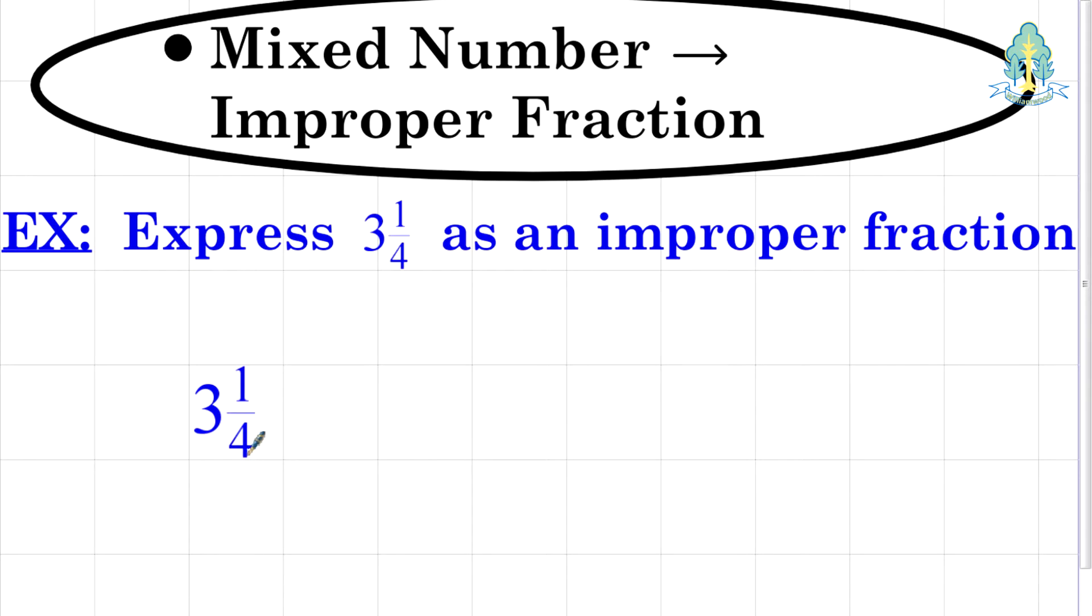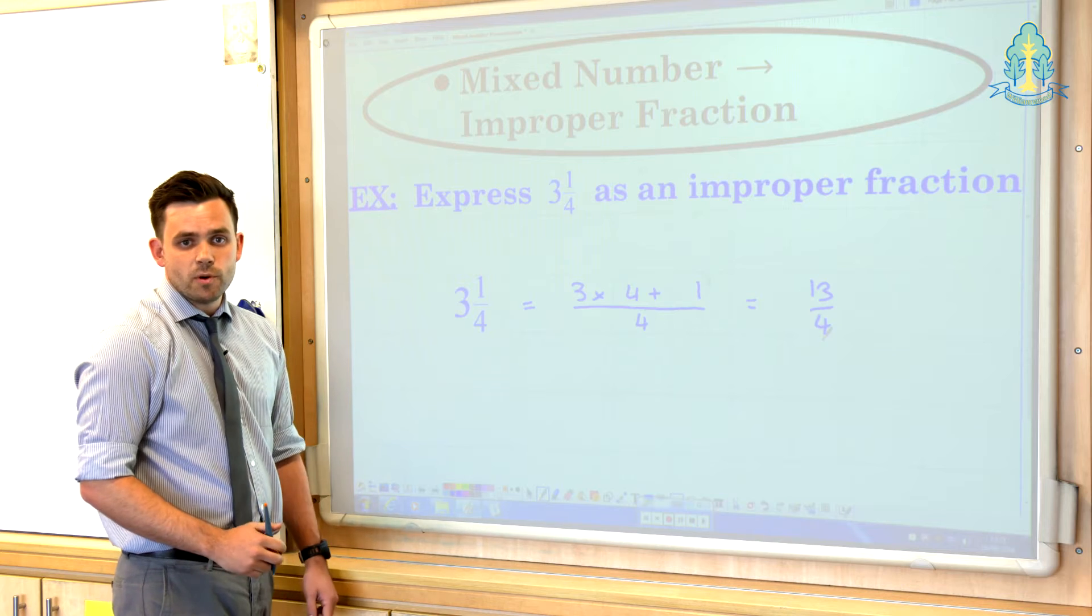We should make that link that we can do this with multiplication. We've got 3 lots of 4 quarters so to do it without any drawings, 3 and one quarter could be expressed as an improper fraction: 3 lots of 4, 3 multiplied by 4. You also have the one extra slice so we add on the extra part and the denominator stays the same in quarters. So 3 multiplied by 4, add on the one extra and that's in terms of quarters. 12 plus 1 gives us 13 quarters as an improper fraction.